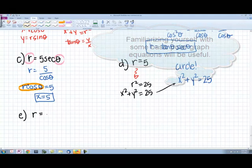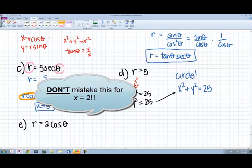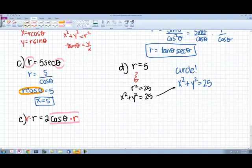For the second to the last one, r equals 2 cosine theta. Our conversion equation is x equals r cosine theta. Now, we're missing an r. We can't just move the r over magically. So what we will do here is multiply an r in. That way, r cosine theta is going to be rewritten as our x.